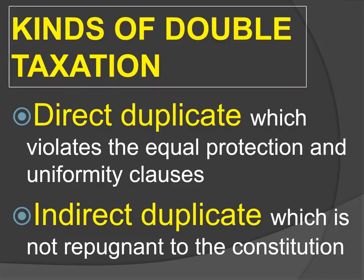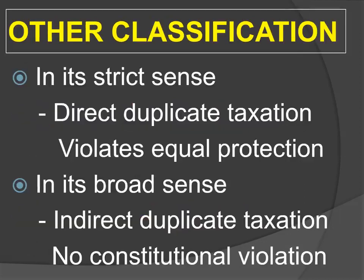You have two tax laws. If there is direct duplicate taxation, then one of the tax laws will be invalidated and therefore there could only be one tax collection, and the economic burden falls only once. However, if you have two tax laws and there is indirect duplicate taxation, then the two tax laws could collect the same taxes and consequently the economic burden would fall twice — you have to pay more.